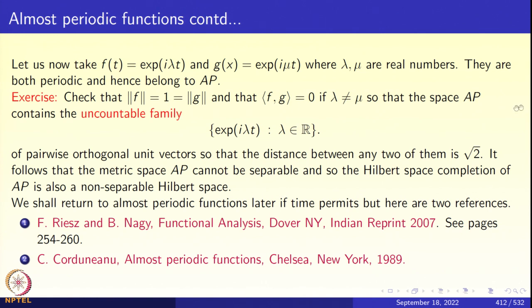So, the space of almost periodic functions contains this uncountable family e^{iλt} where λ varies over the real numbers. If you take λ and μ to be distinct, then the corresponding functions are orthogonal and are unit vectors. So this space AP contains an uncountable family of pairwise orthogonal unit vectors.